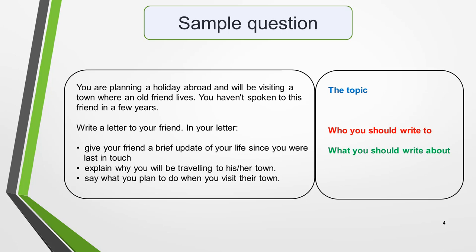Here's a sample question for a letter of explanation with the three parts illustrated. You're planning a holiday abroad and will be visiting a town where an old friend lives. You haven't spoken to this friend in a few years. Write a letter to your friend. In your letter: give your friend a brief update of your life since you were last in touch; explain why you will be travelling to his or her town; and say what you plan to do when you visit their town.